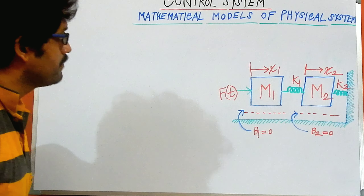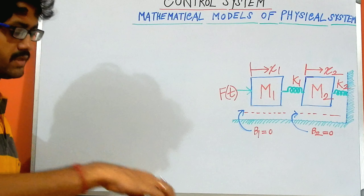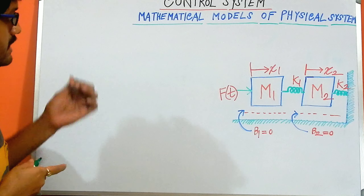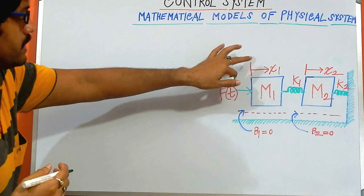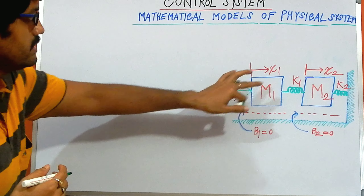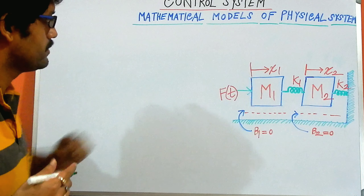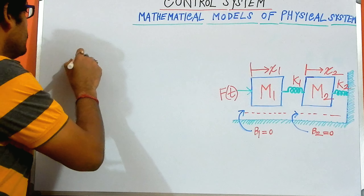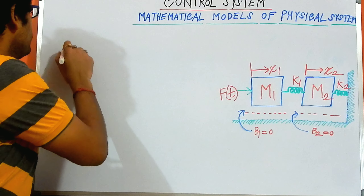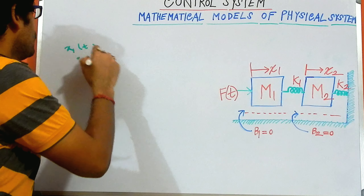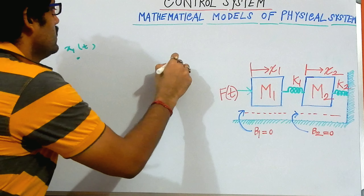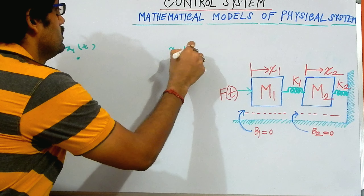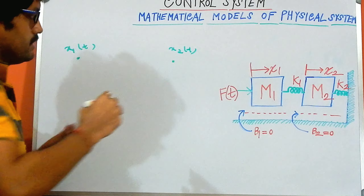This is my problem 2. Here, I can see that x1 is over here and x2 is over there. I would like to draw the x1 and x2 in a different way.